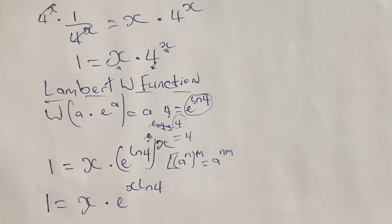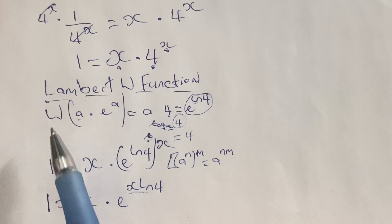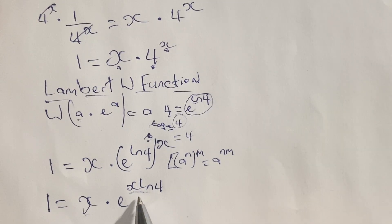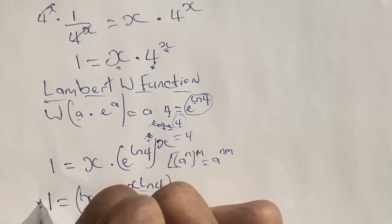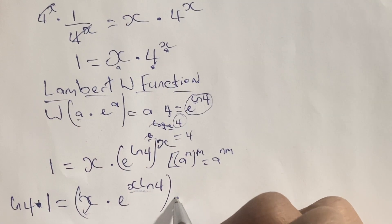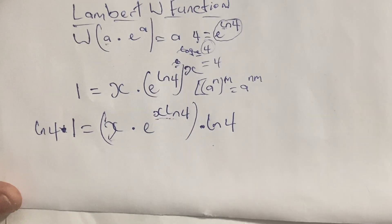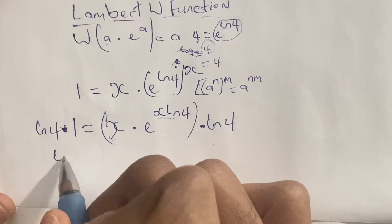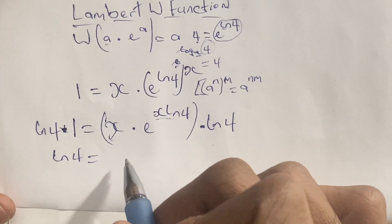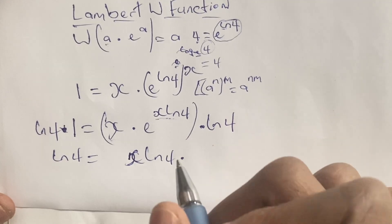Looking at our equation, we have x in the base and x·ln 4 in the power, meaning we no longer have the same value in the base and the power. We resolve this by multiplying both sides of the equation by ln 4. So we have ln 4 times 1 is equal to x times e to the power of x·ln 4, in brackets, times ln 4. Since multiplication is commutative, we can write this as x·ln 4 times e to the power of x·ln 4.